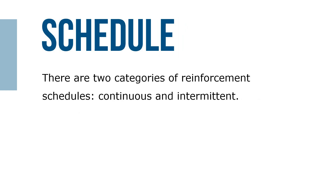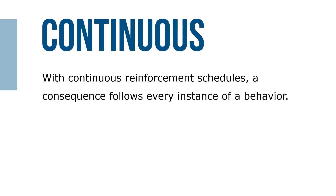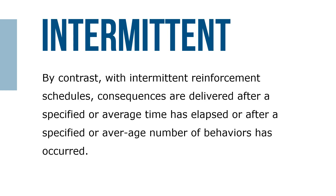A schedule of reinforcement is the set of rules regarding reinforcement contingencies, such as which behaviors will be reinforced, which consequences will follow those behaviors, and the schedule by which those consequences will be delivered. There are two categories of reinforcement schedules: continuous and intermittent. With continuous reinforcement schedules, a consequence follows every instance of a behavior. By contrast, with intermittent reinforcement schedules, consequences are delivered after a specified or average time period has elapsed, or after a specified or average number of behaviors have occurred.